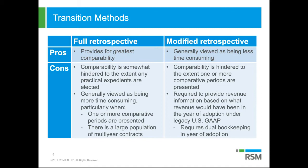The second way to adopt this standard is under the modified retrospective approach. Taking that same example of the private company adopting on 1-1-19, if they were doing comparative financial statements, 2018 would be stated under current GAAP and 2019 would be under 606. The cumulative effect adjustment would come into play at 12-31-18 or 1-1-19. Disclosure requirements require the company to disclose what the revenue recognition and cost methodology would have been under legacy GAAP in the year of adoption, to enhance comparability between the 2018 and 2019 periods presented.